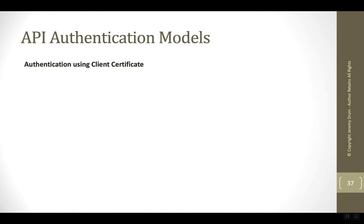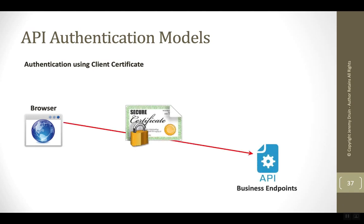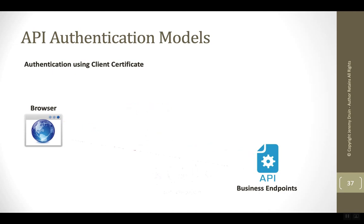An older but more secure model is using client certificates. The browser passes over to the business endpoint a certificate, but this doesn't have the same problems as passing over a password. Since the private key is not exposed during the transaction, the client is able to prove that they know what the private key is without actually having to pass it over to the API, and their certificate vouches for the client. So the API has some trust that the client really is who they say they are, whereas anyone could pass a username and a password. The API would return back the information after authenticating the client.